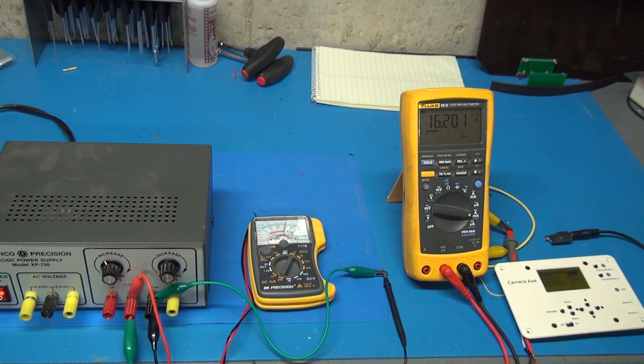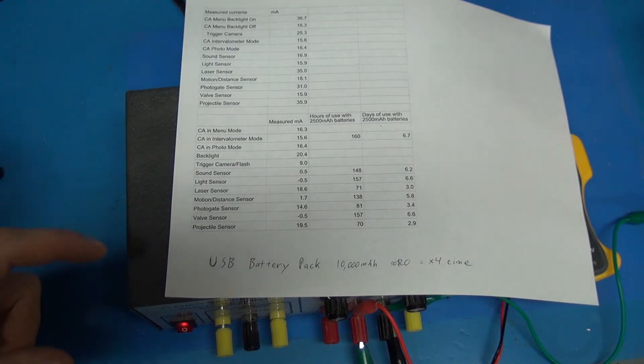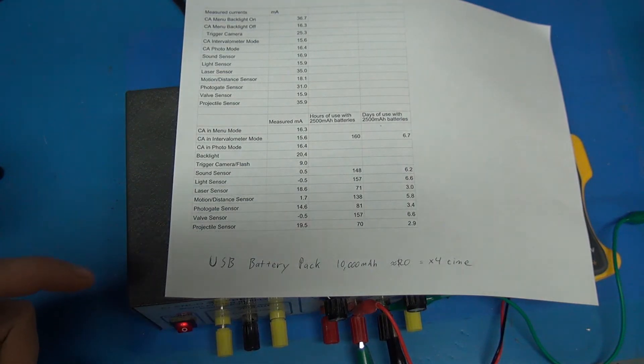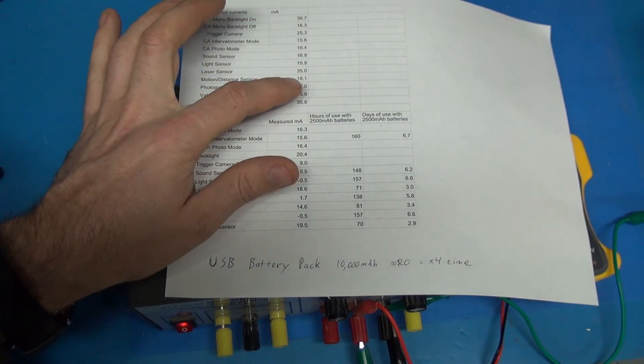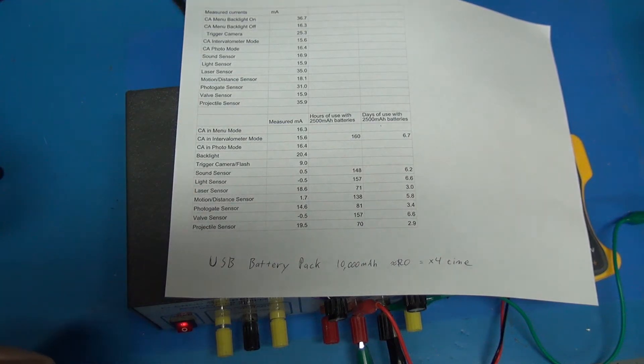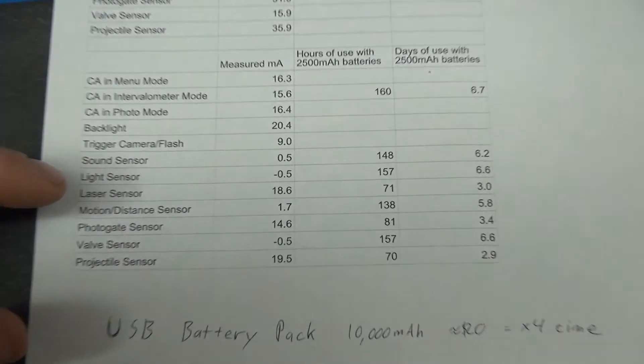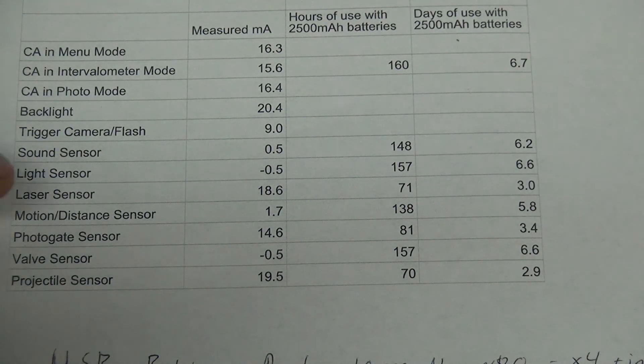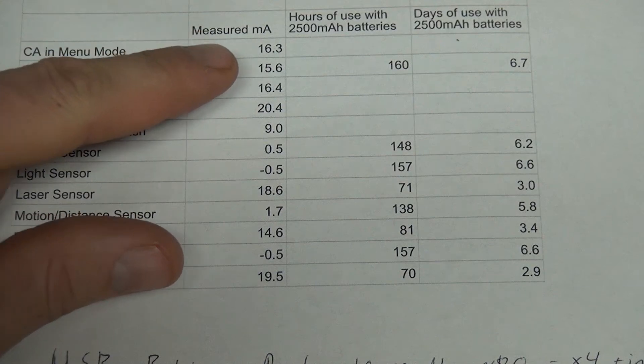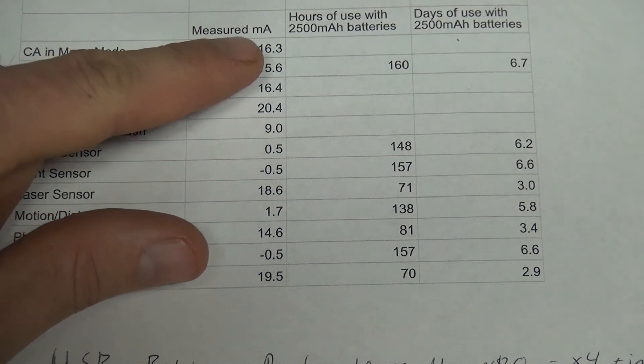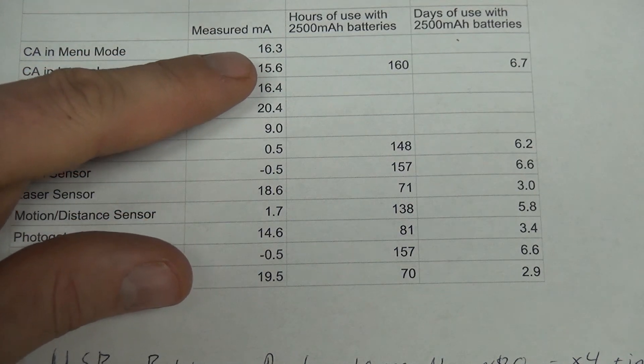Next up, I'm going to go into some of the actual data I collected. Here's a spreadsheet of the data I actually collected. Up here are the raw numbers I collected from the Camera Axe. I'm not going to really go over those. I think these bottom numbers are more interesting, where I derived information from them.